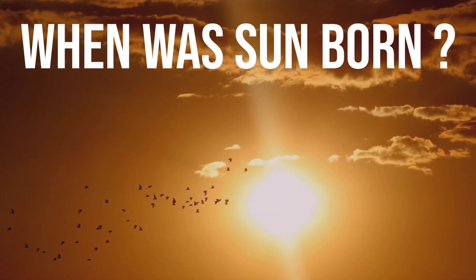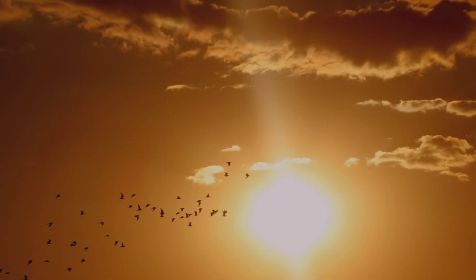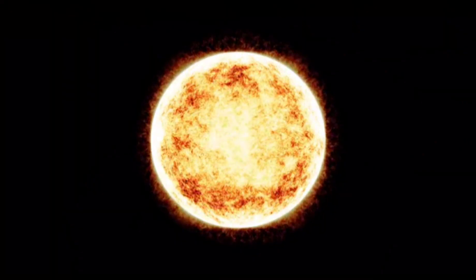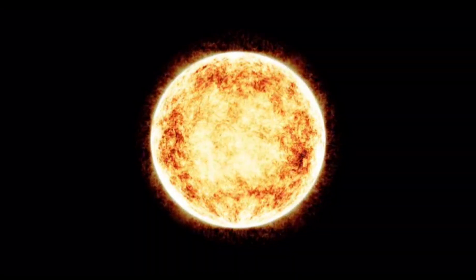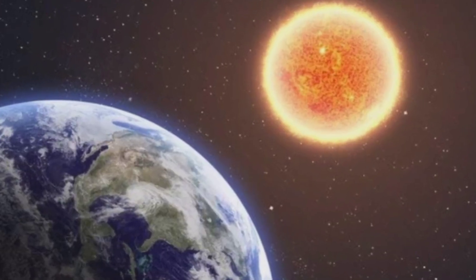When was the Sun born? The Sun, our nearest star, was not born in the conventional sense. It formed approximately 4.6 billion years ago as part of the formation of the solar system.